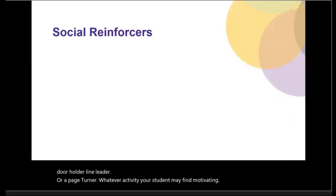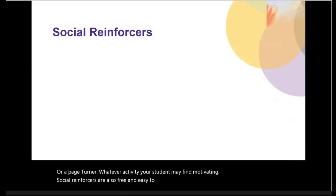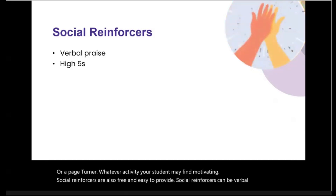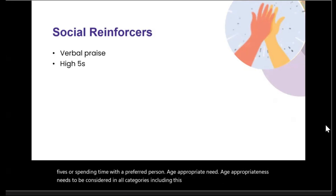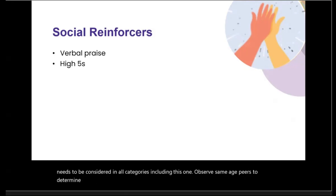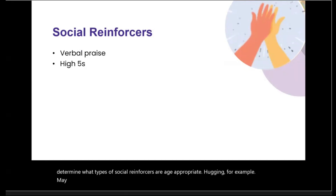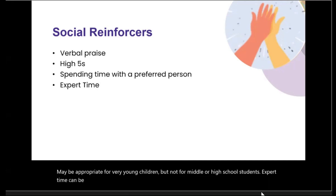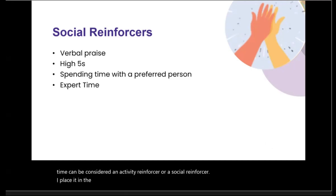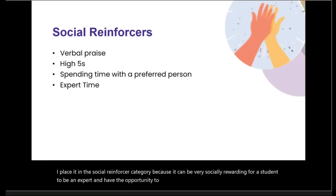Social reinforcers are also free and easy to provide. Social reinforcers can be verbal praise, high fives, or spending time with a preferred person. Age-appropriateness needs to be considered in all categories including this one. Observe same-age peers to determine what types of social reinforcers are age-appropriate. Hugging, for example, may be appropriate for very young children but not for middle or high school students. Expert time can be considered an activity reinforcer or a social reinforcer — I place it in the social category because it can be very socially rewarding for a student to be an expert and have the opportunity to share that expertise with their peers.